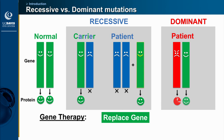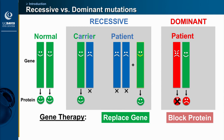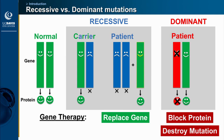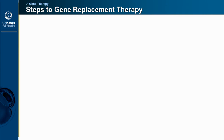However, in dominant diseases, you only need one mutated copy to have the disease, because the abnormal mutated protein actually binds to or interacts with the normal version and causes it to become damaged as well. In this case, gene therapy doesn't work very well, because if you give another good copy of the gene, that will also be damaged. To treat dominant mutations you either need to block that interaction or actually destroy the mutation at the DNA level — which requires gene editing.